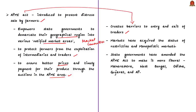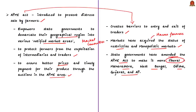Over a period of time, these markets acquired the status of restrictive and monopolistic markets, harming rather than helping farmers realize remunerative prices. Therefore, more than 15 state governments, such as Maharashtra, West Bengal, Odisha, Gujarat, and Andhra Pradesh, have amended the provisions of the APMC Act to make it more liberal and to help farmers.